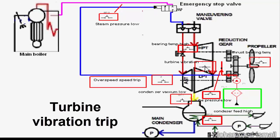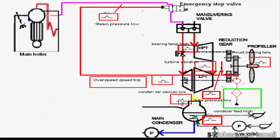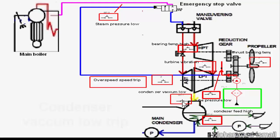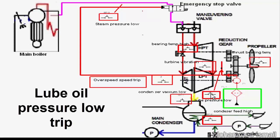Further emergency trip items include turbine vibration trip, condenser vacuum low trip, and lube oil pressure low trip.